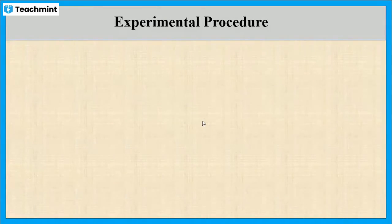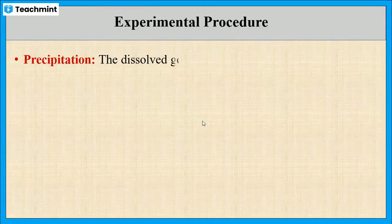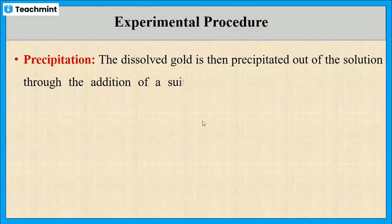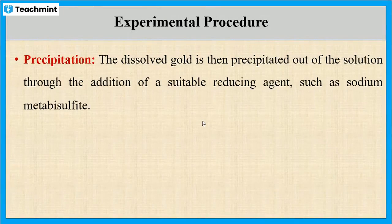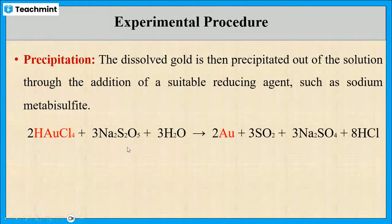Next step is precipitation. Here, the gold is precipitated out from the solution of chloroauric acid when treated with a suitable reducing agent like sodium metabisulfite. When chloroauric acid is treated with sodium metabisulfite and water, gold is precipitated out from the solution and the formation of sulfur dioxide takes place along with sodium sulfate and hydrochloric acid. This is the precipitation step.